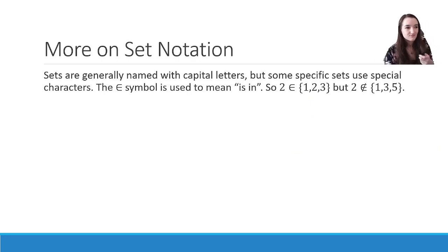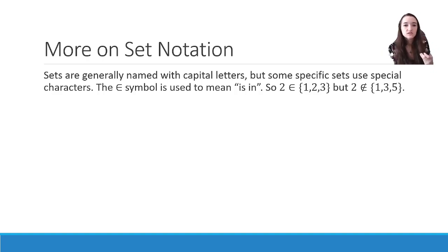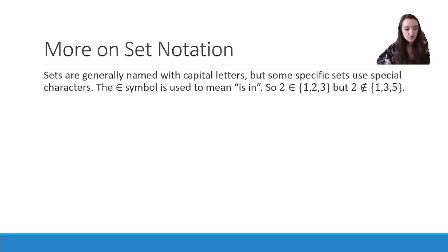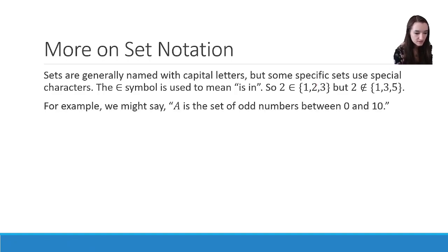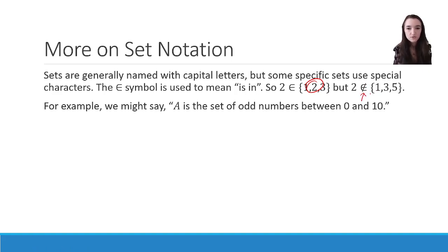Let's look at our set notation a little bit further. Sets are generally named with capital letters, but some specific sets use special characters. We use the element symbol — which looks like a rounded capital E — to mean 'is in' or 'is an element of.' So 2 ∈ {1, 2, 3} means two is in the set containing one, two, and three, which it is. But 2 ∉ {1, 3, 5} — we'd use the same symbol with a line through it to mean two is not in that set, because it's not there.